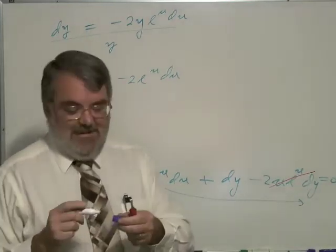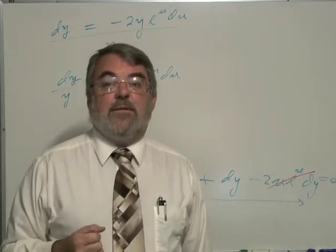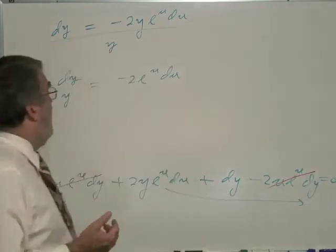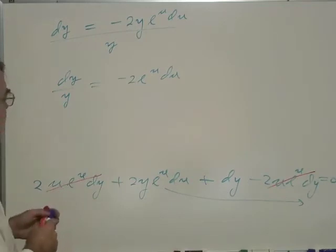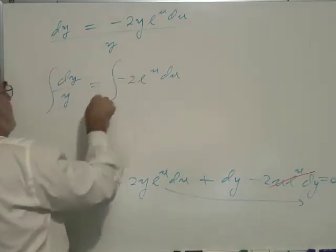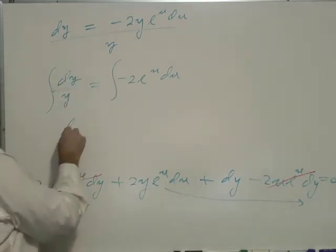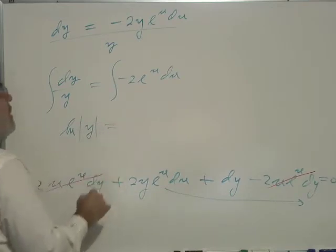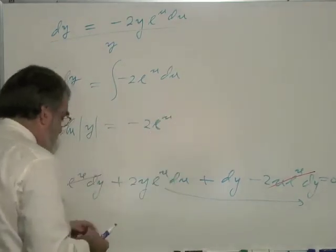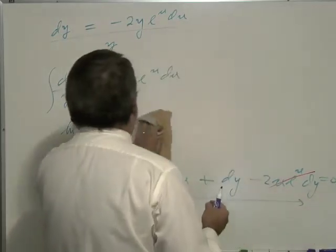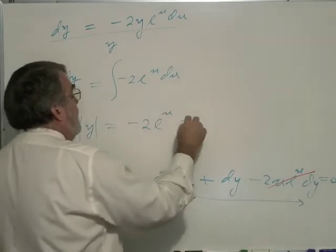So, as built, these homogeneous equations with homogeneous coefficients are separable, ultimately, and we have managed to separate the, in this case, the y's from the u's. So, we're going to integrate both sides, and here you can see we have a logarithm, natural log, absolute value of y, equals minus 2 e to the u. Let me write that a little more legibly. Minus 2 e to the u plus a constant.